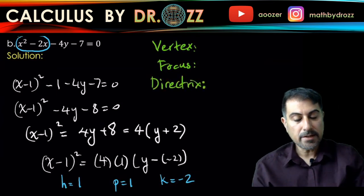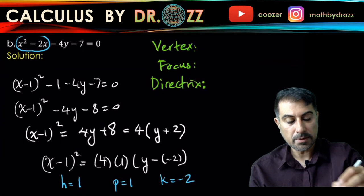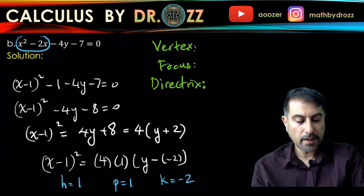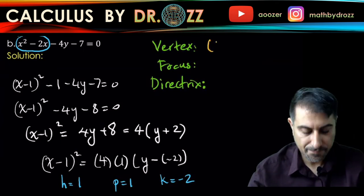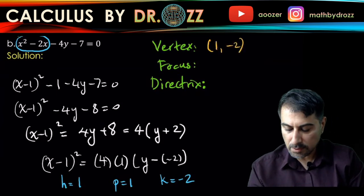The vertex comes with the coordinate h and k, so I'm going to write it as 1 and negative 2.